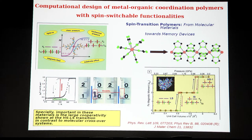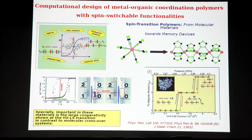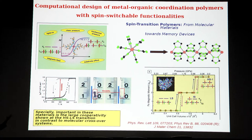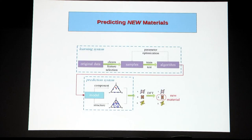Since the transition can also be triggered by shining light, you can use it as an optical switch — by shining light the material changes its color and remembers which path was taken. Our computational research showed that many synthesized polymers of this kind have not been probed for such spin crossover properties with cooperative effects, but these properties can be induced, making them extremely useful as memory devices.